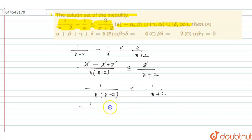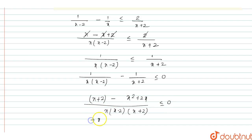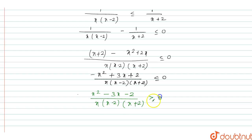This equation can also be written as 1/[x(x-2)] - 1/(x+2) ≤ 0. Expanding, we get [x+2 - x²+2x] / [x(x-2)(x+2)] ≤ 0. Multiplying by -1, this becomes [x² - 3x - 2] / [x(x-2)(x+2)] ≥ 0.